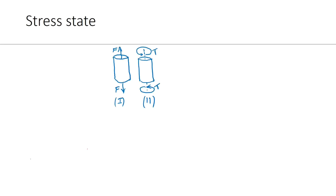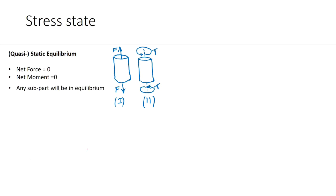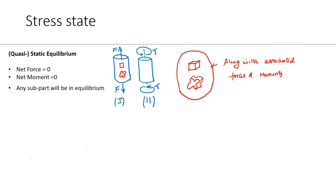Let me explain the stress state in a simple way. Most solid mechanics problems, including these two examples, are in a state of quasi-static equilibrium, which means the net force and the net moment are zero. It also implies that any subpart will be in equilibrium — if I take two subparts of different shapes and isolate them along with the forces and moments, each of these subparts will be in equilibrium. Let's exploit this to obtain the state of stress.